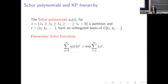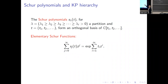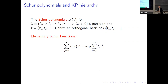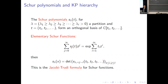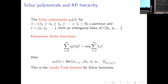I will introduce the Schur functions. For every partition lambda, there is a Schur function, and they form an orthogonal basis for the ring of polynomials. The way you define it is by first defining the elementary Schur functions, which you define by a generating series, more or less. Then once you have the elementary Schur functions, you can define S-lambda by some determinant — this is known as the Jacobi-Trudy formula for Schur functions.